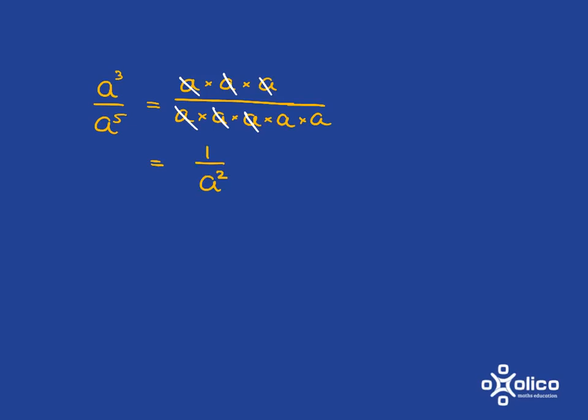Now I'm going to look at a cubed over a to the 5 in a different way, and that is just using that exponent rule you've been using all along. And that's going to give me a to the 3 minus 5, because our rule says when we are dividing we subtract the exponents, and so we're going to get a to the negative 2.